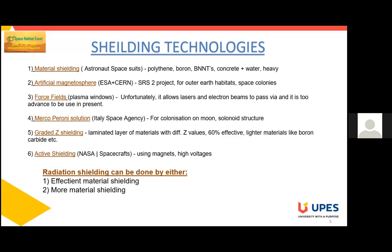Active shielding, using magnets, high voltages, or artificial magnetospheres to slow down or deflect radiation, has been considered to potentially combat radiation in a feasible way. However, the cost of equipment, power, and weight of active shielding outweigh their benefits. Radiation shielding can be done in either of two ways: efficient material shielding or more material shielding.